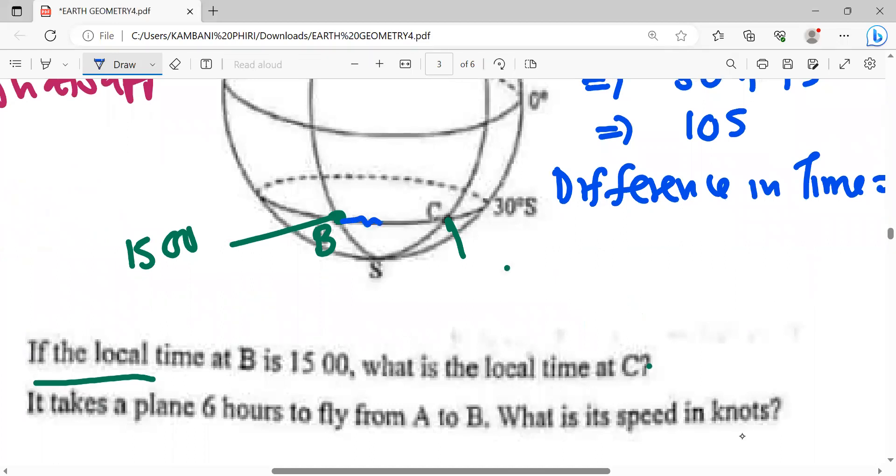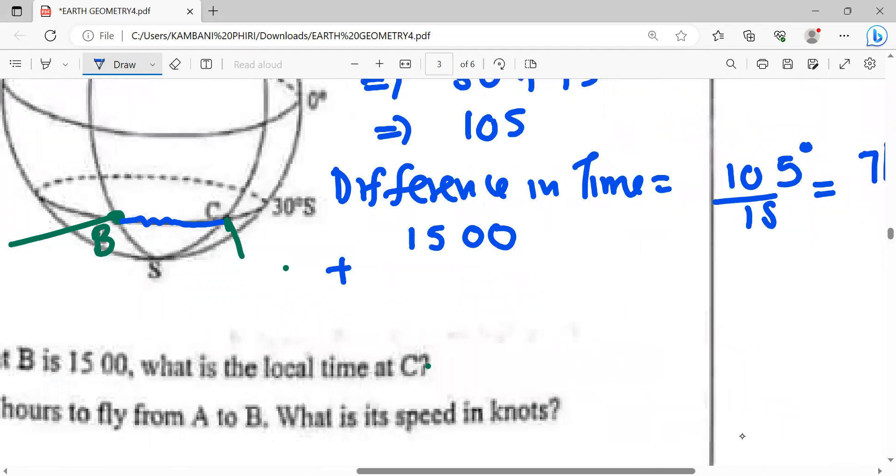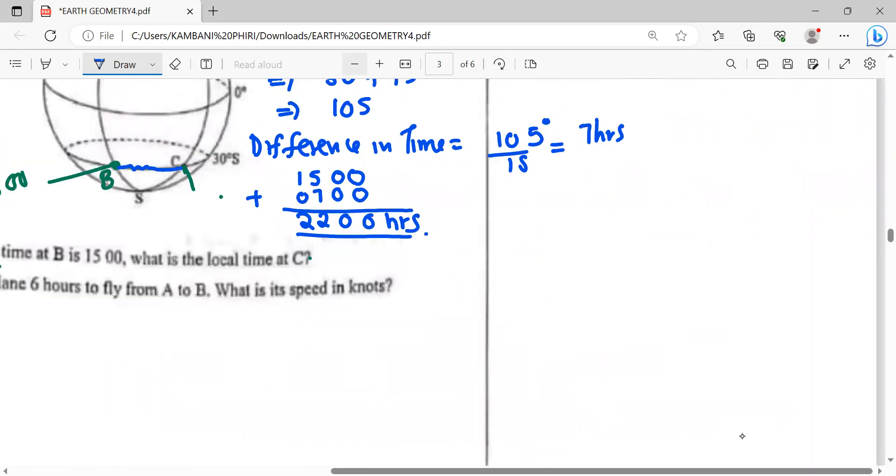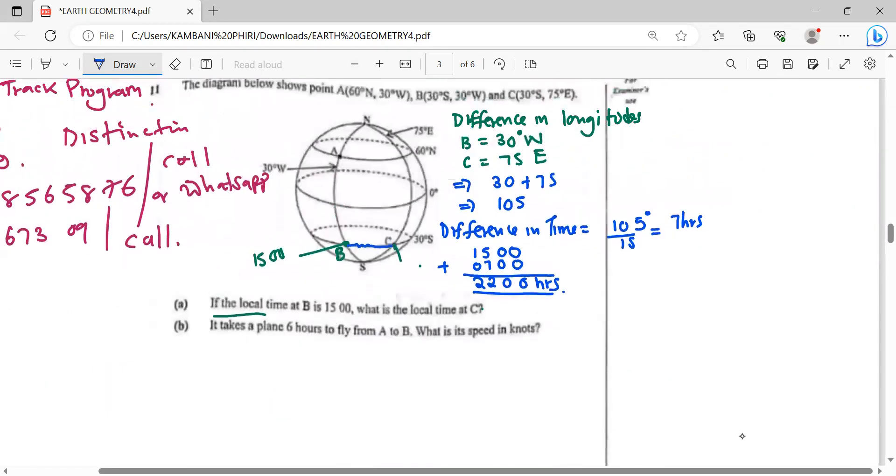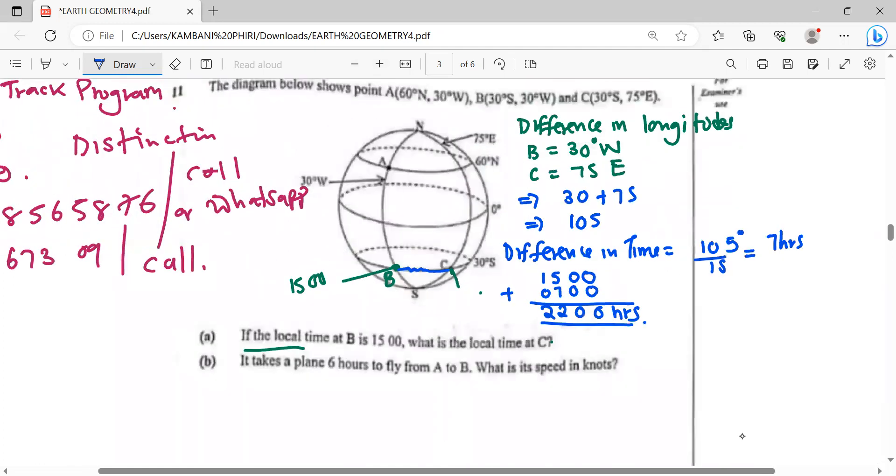Since C is on the right-hand side, we add time. The time at C will be 15 hours plus 0007 hours, which equals 0007 hours. When you add here you are going to have 0022. At point C it will be 22 hours.